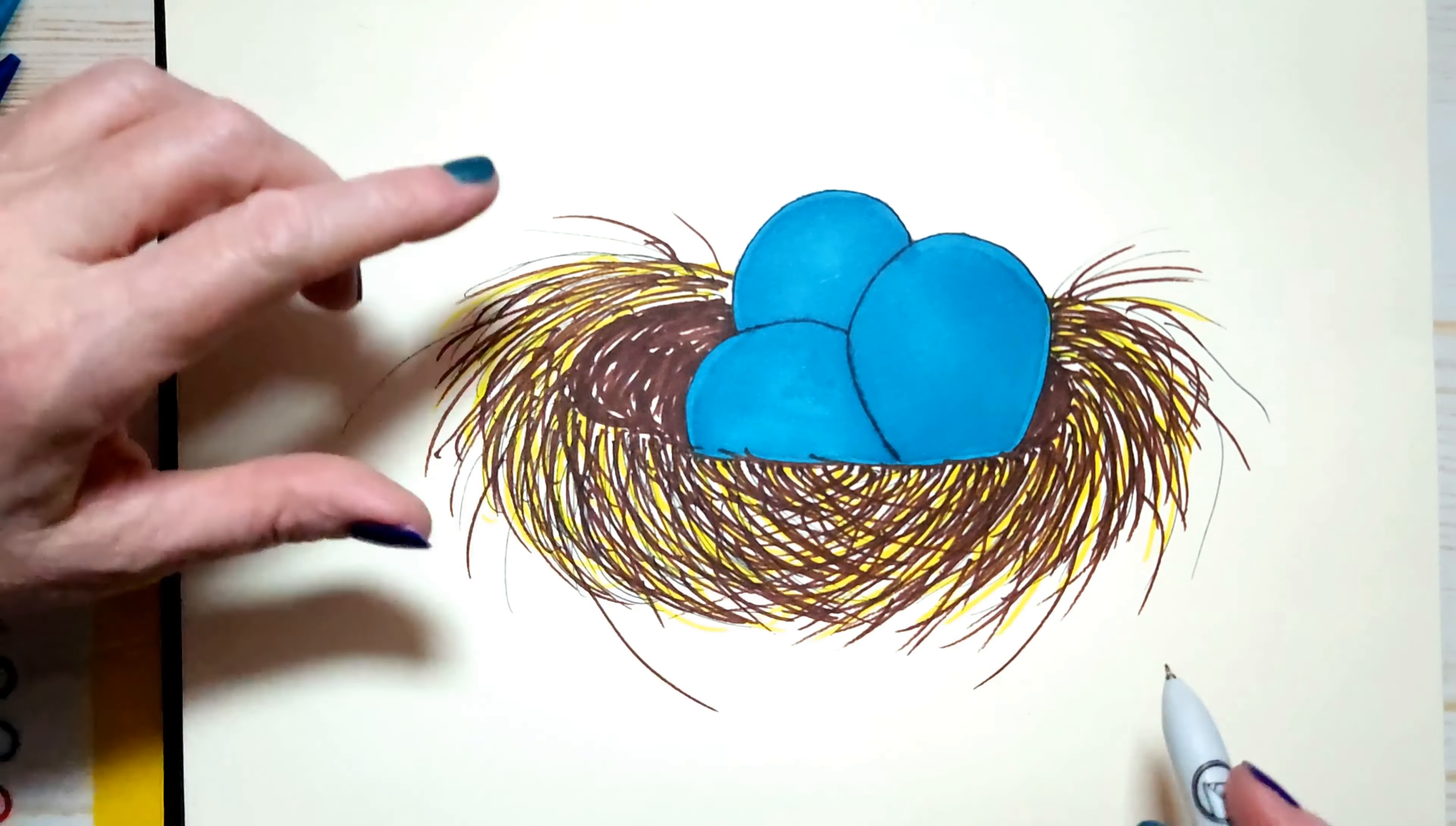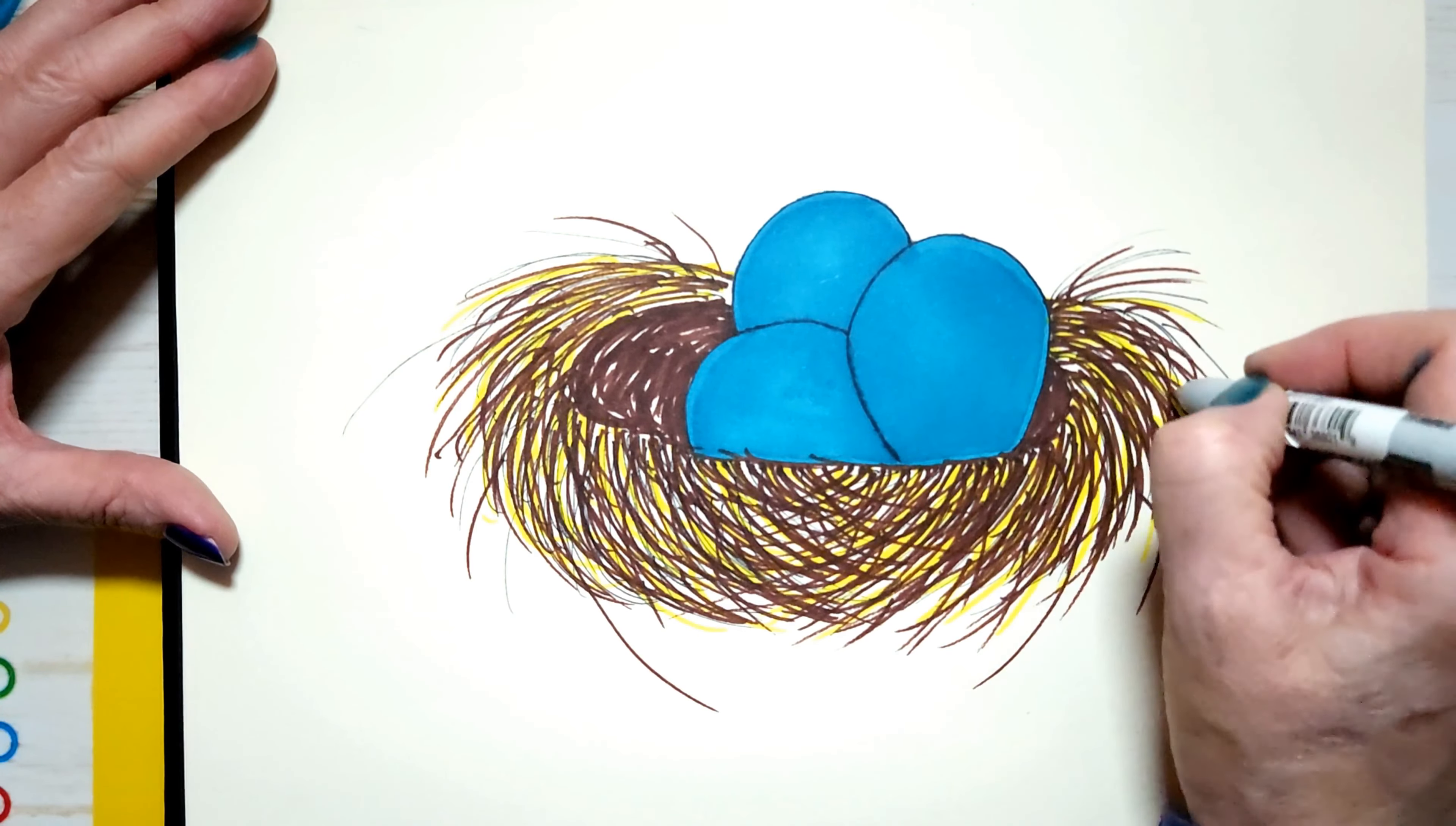I'm just trying to fill in anywhere where I think there might be a little too much of the page showing through.